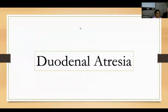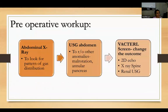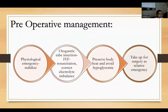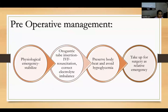Coming to the management part, for duodenal atresia, preoperative management begins. This is a physiological emergency; the priority is to stabilize the patient. An orogastric tube is inserted for gastric decompression, IV fluids are given for resuscitation and electrolyte correction, body heat is preserved, and hypoglycemia is avoided. The patient can be taken for surgery as a relative emergency.